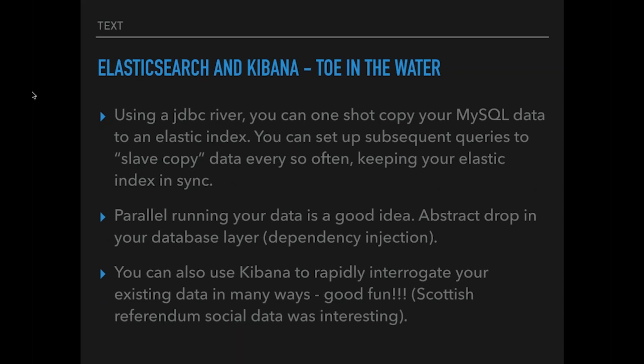What I first did was dip our toes in the water a little bit, because I didn't want to upset customers — I wanted to get familiar with Elasticsearch as much as possible. It comes with a great tool called Cabana. Cabana is something you install on any server as long as you've got permissions to the Elasticsearch cluster, and you can actually create a river — so Mongo rivers or MySQL rivers — to your Elastic cluster. I had our entire dataset shot over to Elastic into an index and did a query every five minutes to keep that index up to date, a bit of parallel running, which is always a good idea with any new technology.